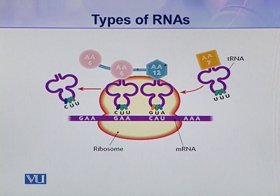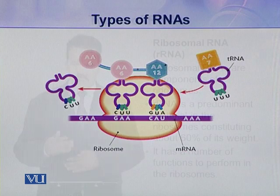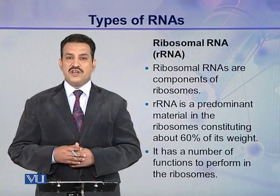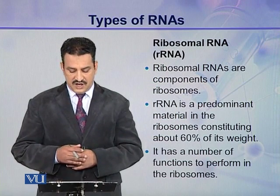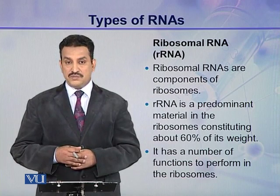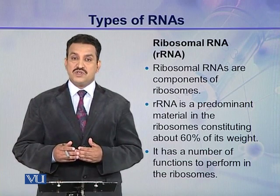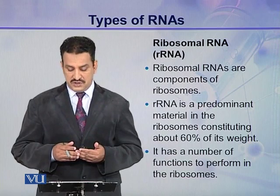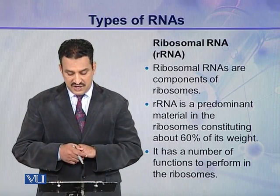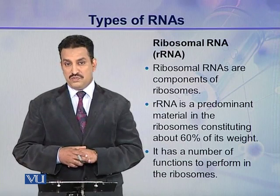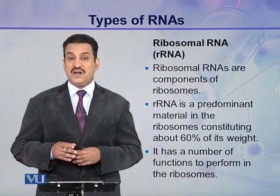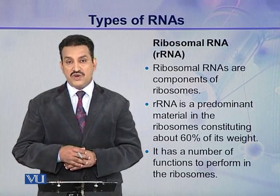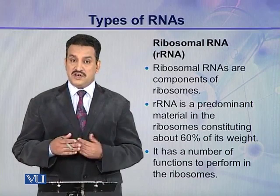In this way they help in the synthesis of proteins. The third type of ribonucleic acid is ribosomal RNA or rRNA. Ribosomal RNAs are components of the ribosomes, and ribosomes are the protein synthetic machineries. Ribosomal RNA is the predominant material in the ribosome and comprises about 60% of ribosomes by weight. It has a number of functions to perform in the ribosome during the process of protein synthesis.